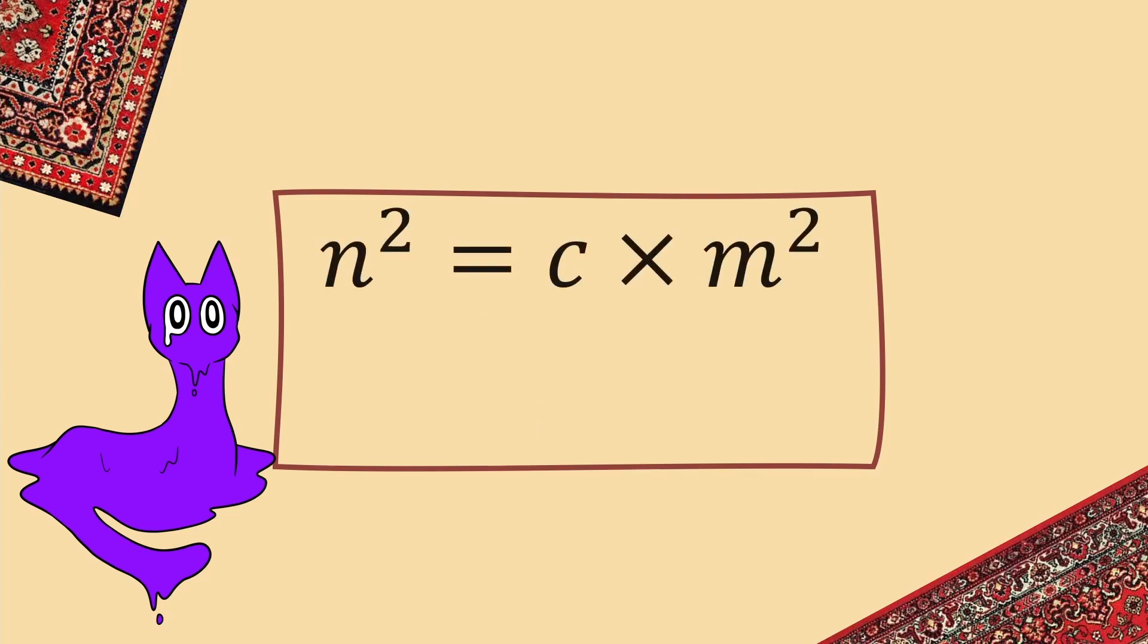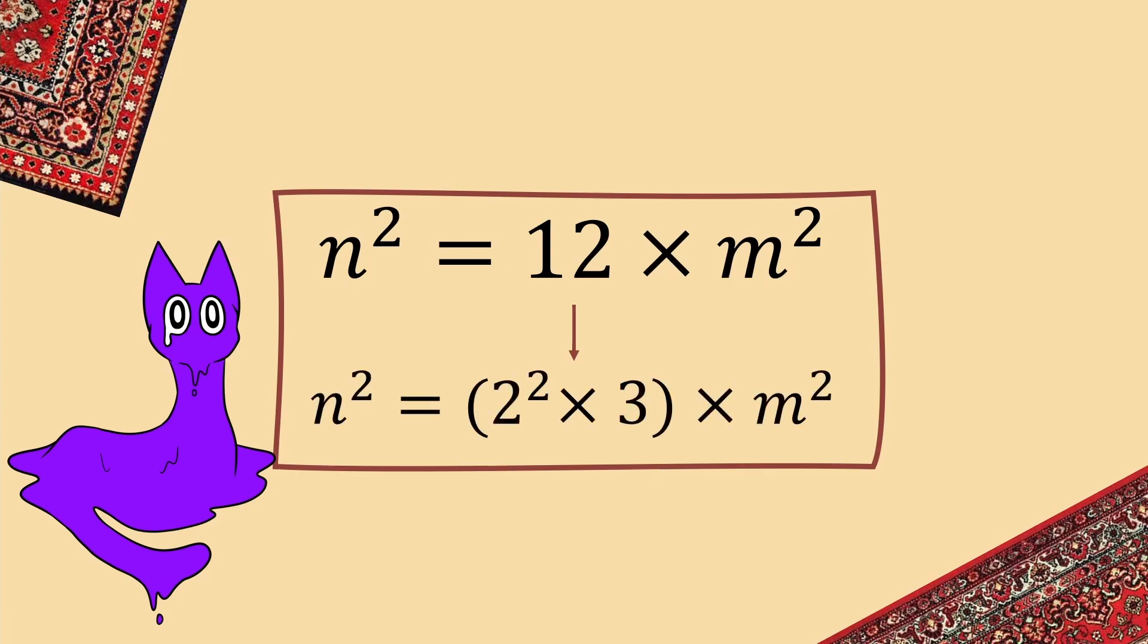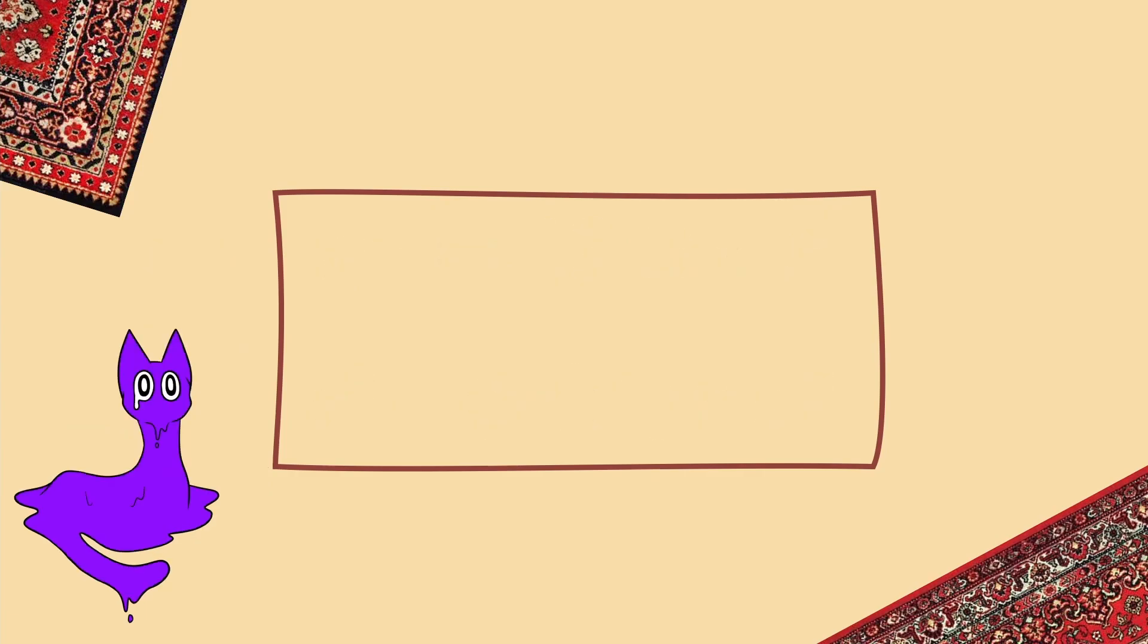But what about composite numbers? Well, if we break a composite number down into its prime factors, we can do the same. So, I'm going to use 12 as an example. And 12 breaks down to 2 squared times 3. 2 squared times 3 times n squared. Could this be a square number?